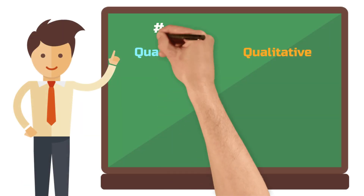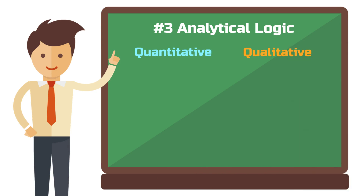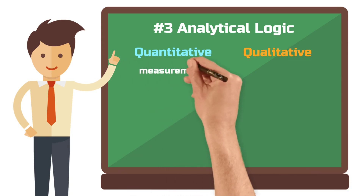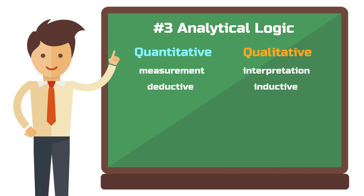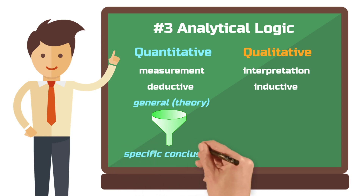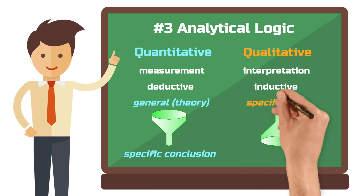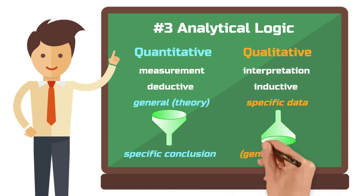Difference number 3: analytical logic. Quantitative research typically measures things and follows a deductive logic. Qualitative research typically interprets things and follows an inductive logic. Deductive logic means using a general mental model to form a specific conclusion — for example, using a theory to derive hypotheses. Inductive logic means starting from a very specific example or case and forming a general conclusion — for example, using interview data to generate a theory.